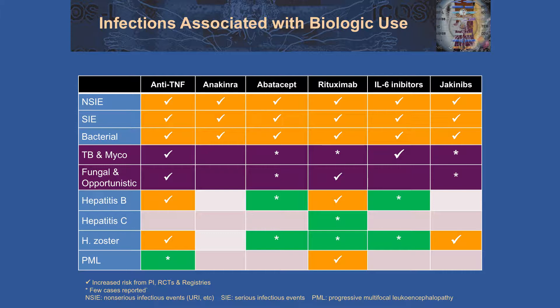We worry about reactivation of TB and other non-tuberculous mycobacterial infections, in particular with anti-TNFs and IL-6 inhibitors, fungal and opportunistic infections with anti-TNFs and rituximab, reactivation of hepatitis B — we get most concerned with rituximab — and, of course, herpes zoster with the JAK inhibitors.